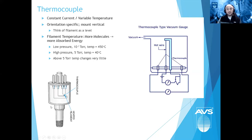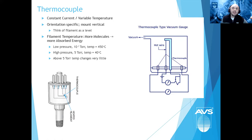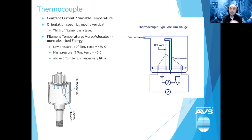For example, with a thermocouple gauge designed to be mounted vertically — so the filament inside is horizontal — if you flip it 90 degrees so the filament is vertical, you could see a reading of 300–400 torr at atmospheric pressure instead of the correct 760 torr. Based on orientation alone, you can significantly skew the measurement from a gas-dependent gauge. Also, at lower pressures with little molecular interaction, the gauge tube gets very hot due to low heat transfer; above about 5 torr, the filament itself is not very hot because of the abundant gas interaction.